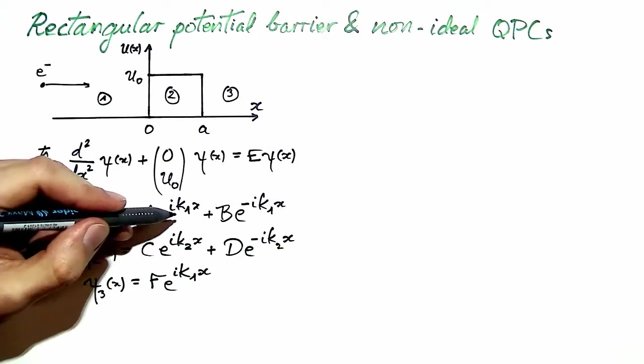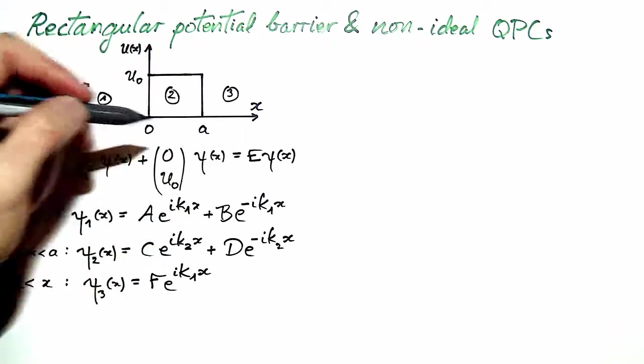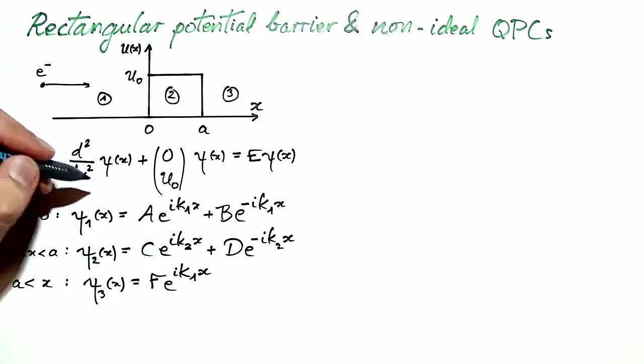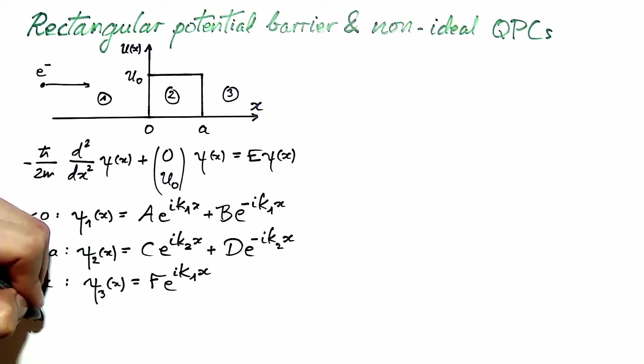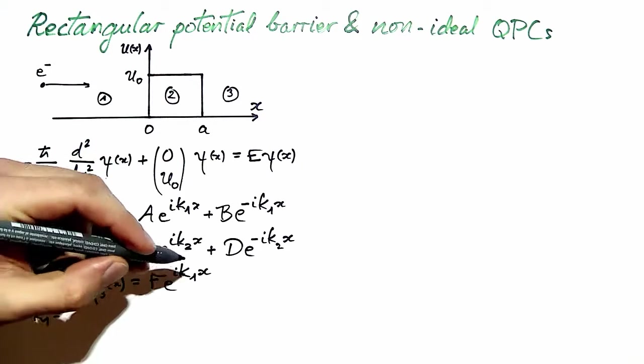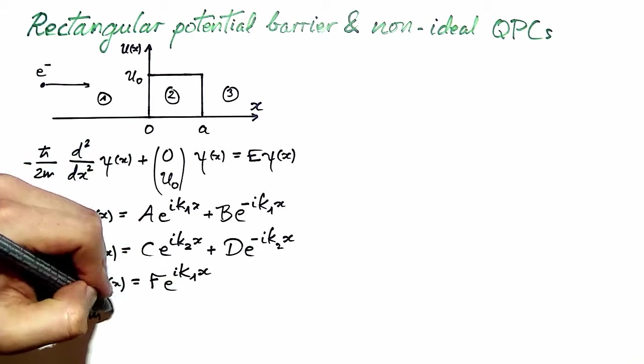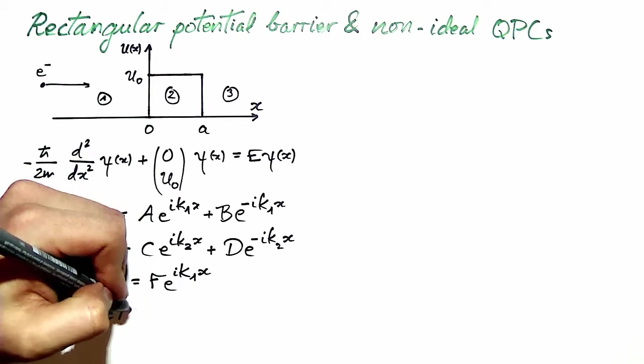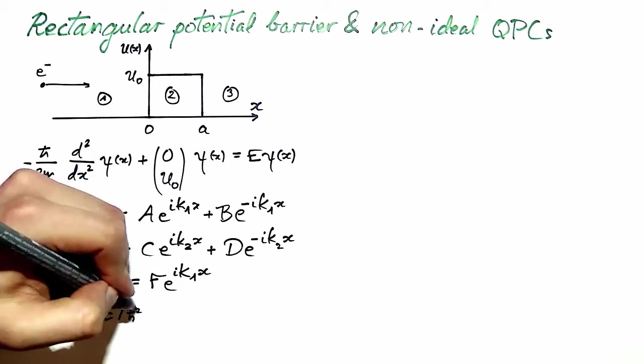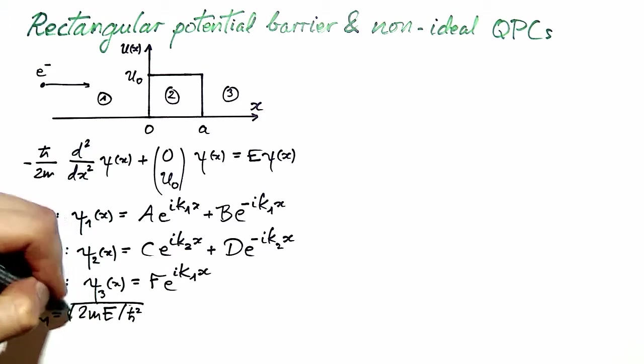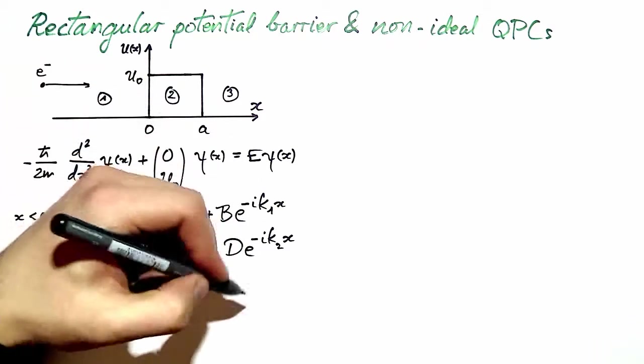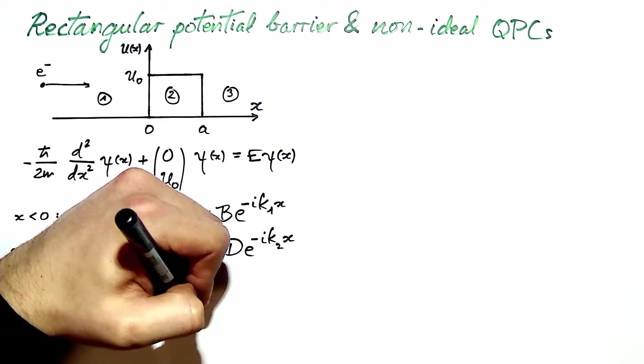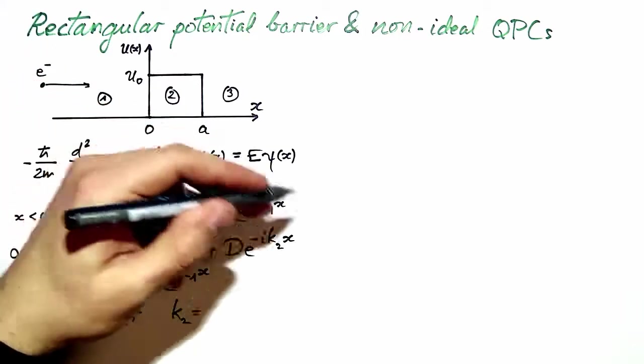Now, the wave vectors k are given by the energy and the potential. In region 1 and 3, we have the same vector k1 given by E. And in the barrier, the wave vector k2 given by E minus U0.